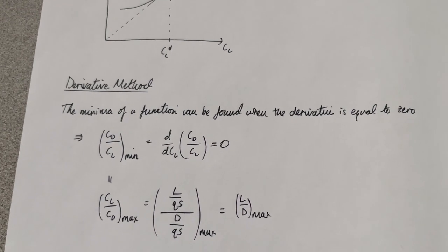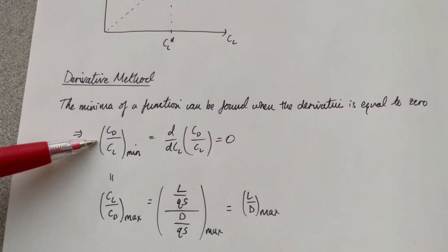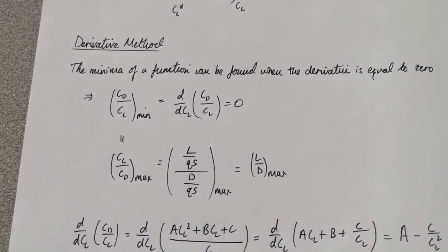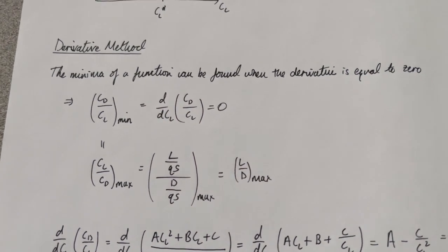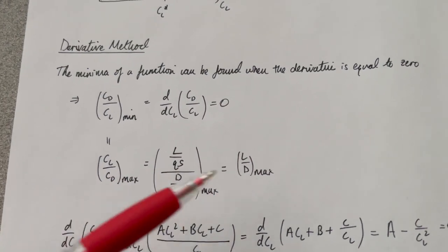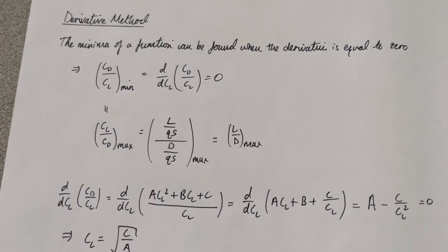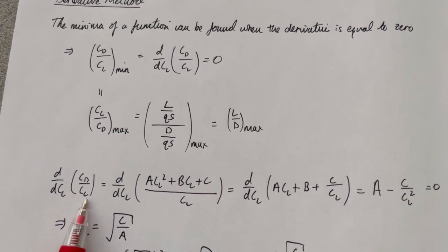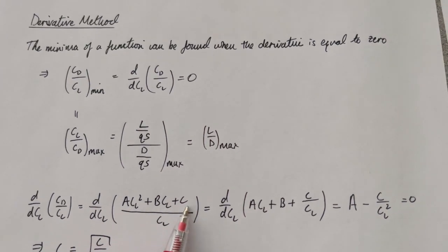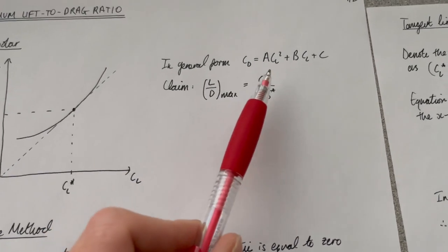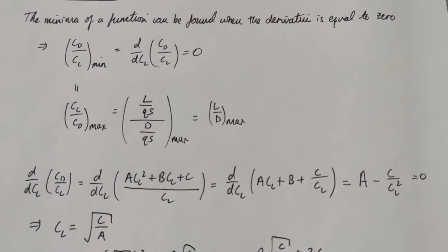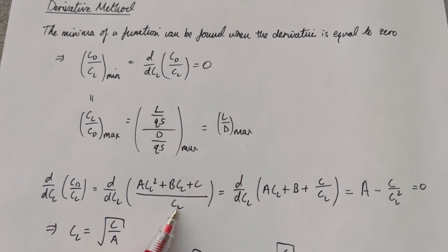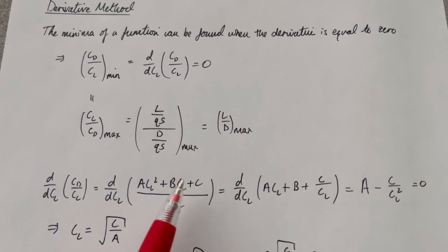The key thing is that minimizing CD/CL is the same as maximizing its reciprocal, CL/CD max, which — because CL and CD are both non-dimensionalized with respect to dynamic pressure q and wing reference area S — simply gives L/D max. So we take the general quadratic form of CD and divide by CL to get CD/CL, which is ACL + B + C/CL.